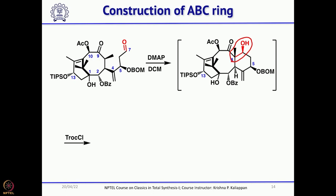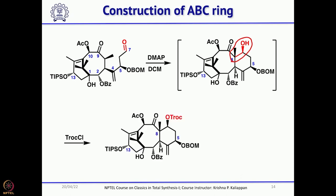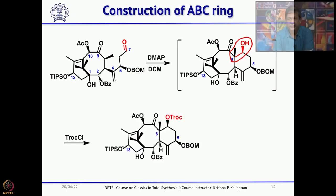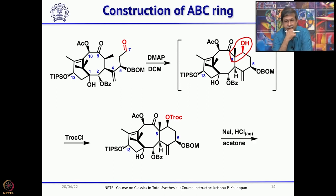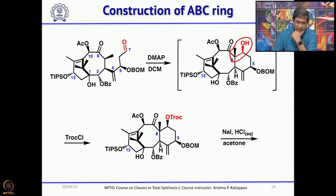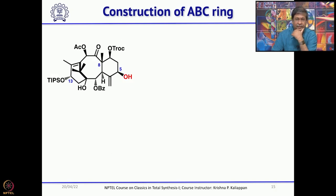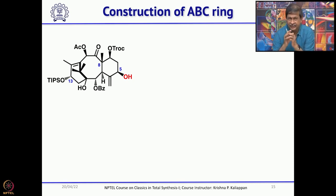The secondary alcohol was protected as a Troc ether — that is a quite easy protecting group to prepare. Then treatment with sodium iodide and aqueous HCl removes the BOM group selectively. Now you have the allylic alcohol. So far, the A ring, B ring, and C ring have all been made. Now you have to go for making the D ring.